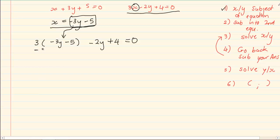So we have got minus 9y minus 15 minus 2y plus 4 is equal to 0.